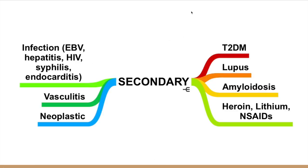What do we mean by secondary causes? We're talking about a variety of different pathologies that may cause a loss of protein and nephrotic syndrome — things like diabetes, lupus, amyloid, medications, drugs, cancers, infections, and autoimmune conditions.